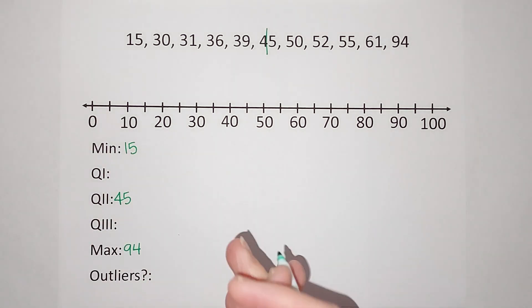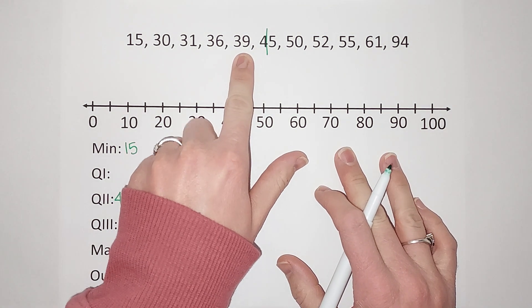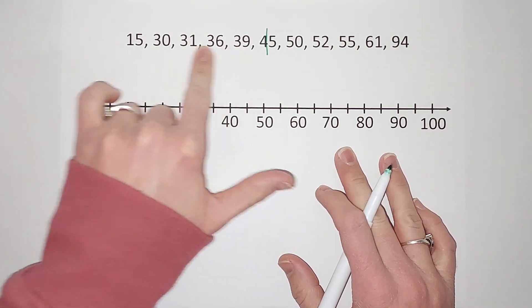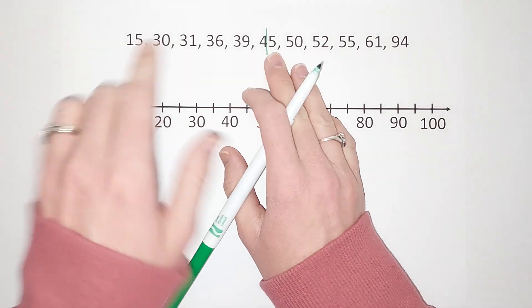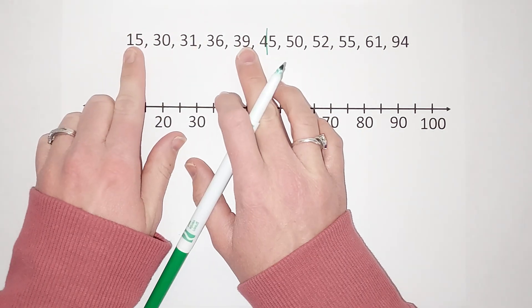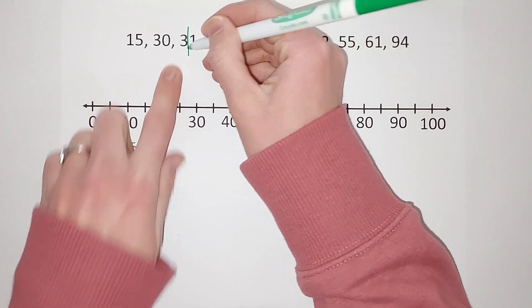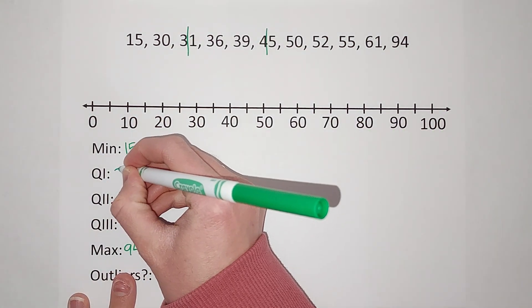To find quartile 1, I'm going to find the middle of these numbers to the left of my median. We count to the middle, and it's just one number. Again, if it were two, add them and divide by two.